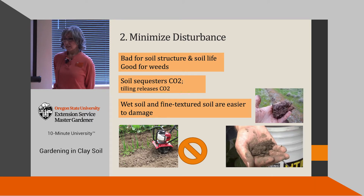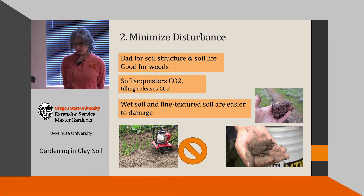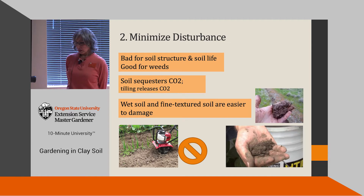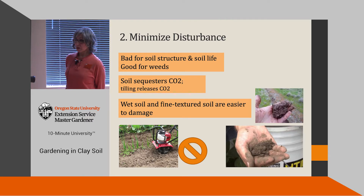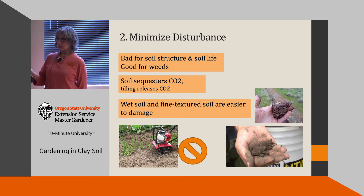The second step is to minimize disturbance — meaning digging, tilling, and turning over the soil. Disturbance damages soil structure and kills soil life. Think about those fungal hyphae: digging and tilling cuts them up. Beneficial nematodes are extremely sensitive to disturbance — tilling kills them. Disturbance is also good for weeds, because there are lots of dormant weed seeds in our soil; turn them over, give them light, and off they go. Something else to consider: soil sequesters carbon dioxide, a greenhouse gas. Tilling speeds up decomposition by introducing oxygen and air, causing organic matter to break down faster and releasing CO2 into the atmosphere.